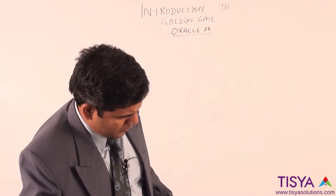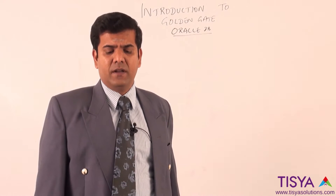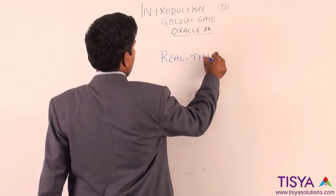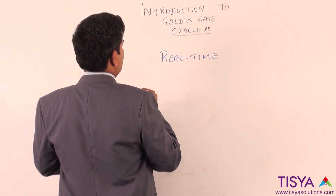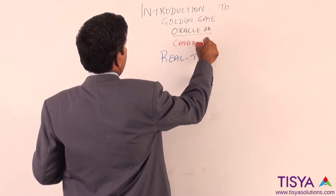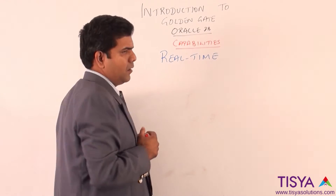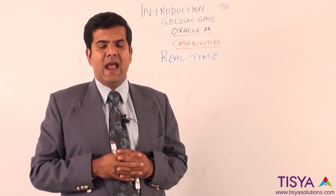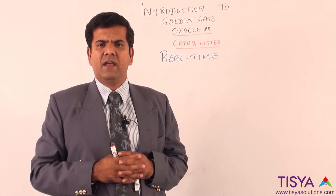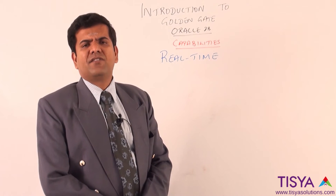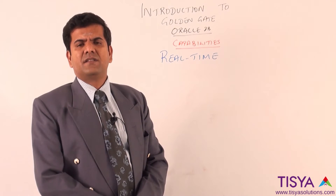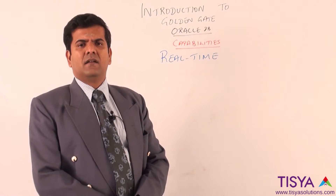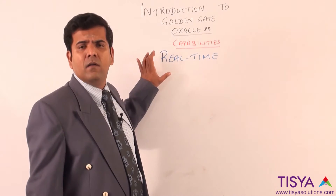What are the key capabilities when it comes to Golden Gate? First and foremost, it is real time. Golden Gate makes use of redo log-based capture and it is very efficient and very fast — the capture and replication could be near real time. Sub-second replication can happen, which ensures the synchronization between the primary and the target is almost real time.